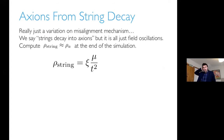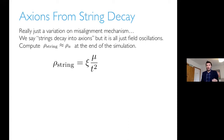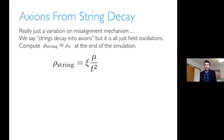Now we need to work out how many axions we get from this process. It's really just a variation of the misalignment mechanism: strings decay into axions. What's happening is we've got modes in the radial Peccei-Quinn field, and as they roll off the top of the potential they turn into short-wavelength modes in the angular directions. It's all simulated with classical field theory — not putting particles in, just modes. What you need to work out is the string density at the end of the simulation and the density in the axion oscillations.